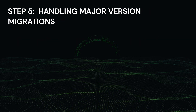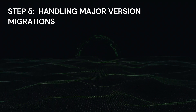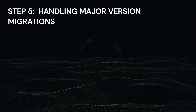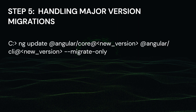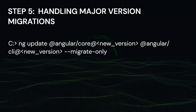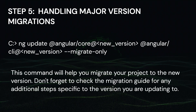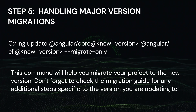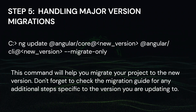The fifth section covers handling major version migration. If you are moving between major versions, like from Angular 10 to 11 or Angular 11 to 12, you may need to perform a migration. For this we use the command: ng update @angular/core@<new-version> @angular/cli@<new-version> --migrate-only. This command will help you migrate your project to the new version. Don't forget to check the migration guide for any additional steps specific to the version you are updating to.